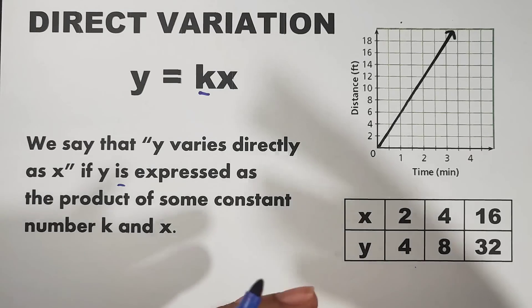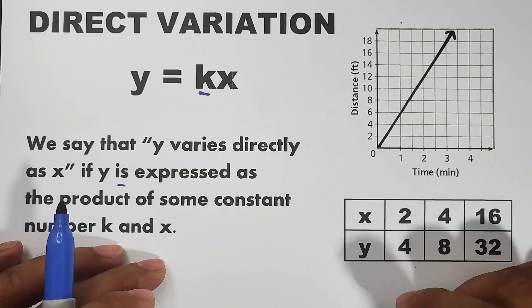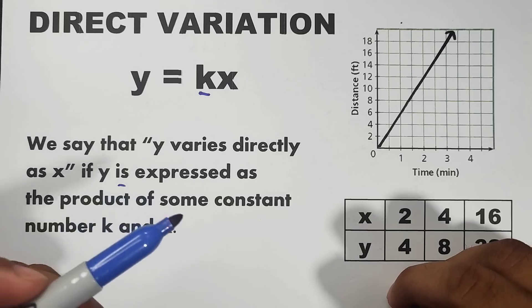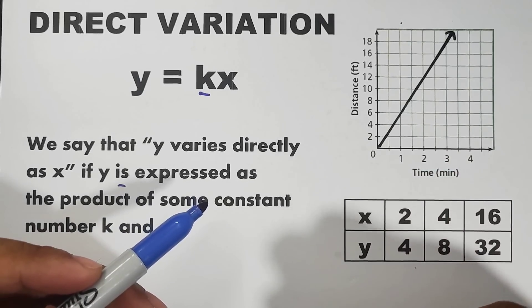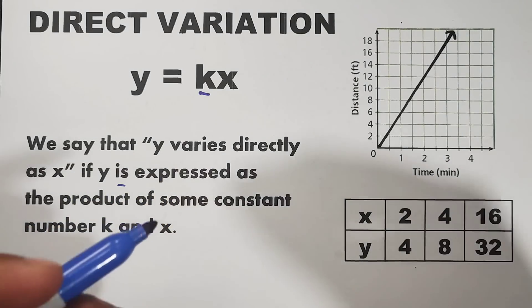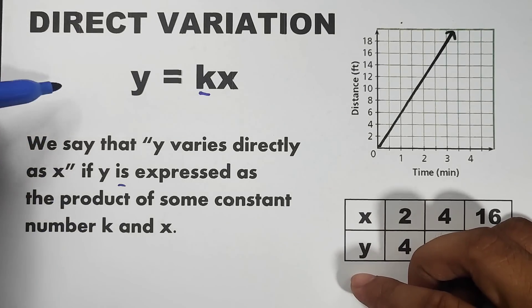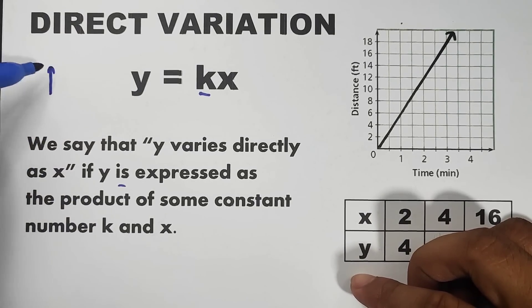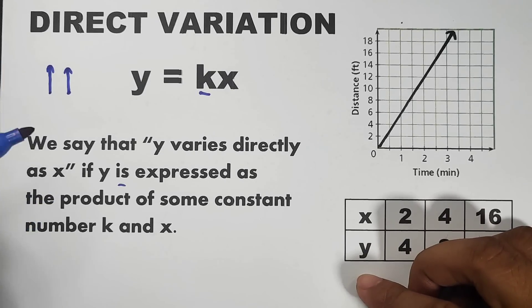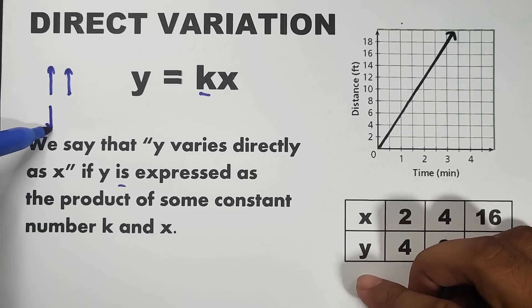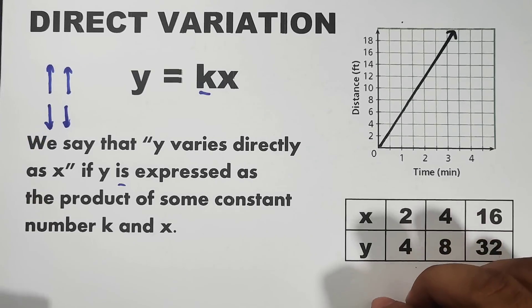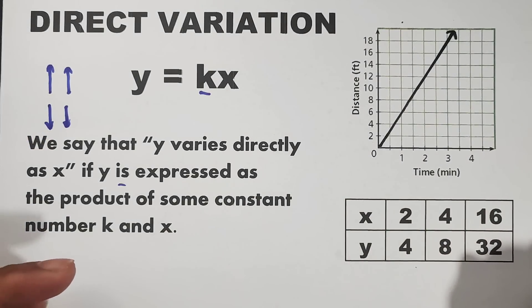Now, simple definition or simple thing that you need to understand about direct variation, simple lang yun. If one quantity increases, yung isa rin ay nag-increase. On the other hand, if one quantity decreases, yung isa rin ay nag-decrease. Meaning, if yung isang variable natin ay tumataas, ang behavior din ng isang variable will go up. Kapag naman bumaba yung isang variable or isang quantity, the other variable will also decrease. That's the basic concept of direct variation.